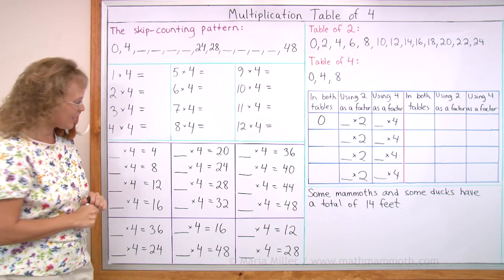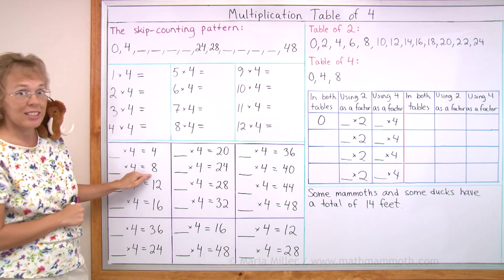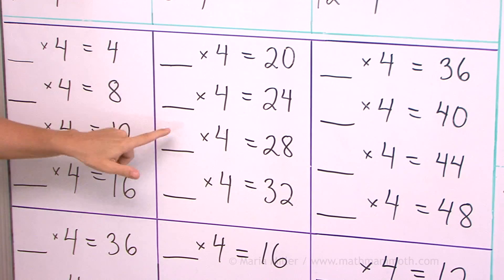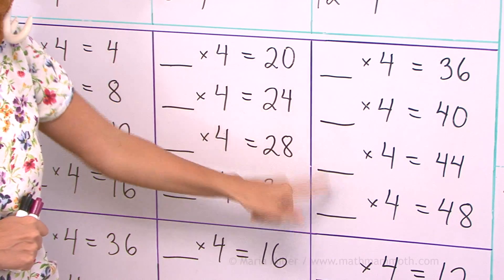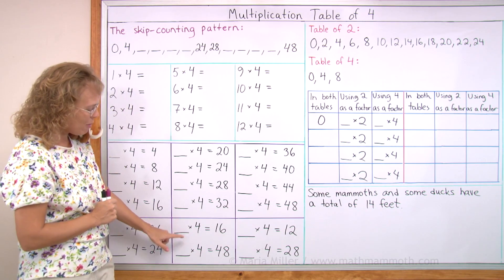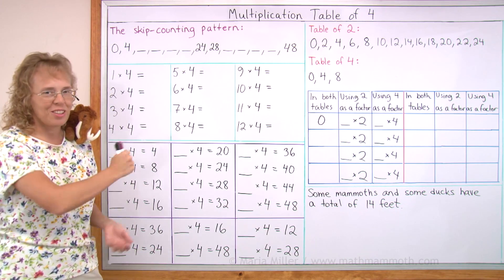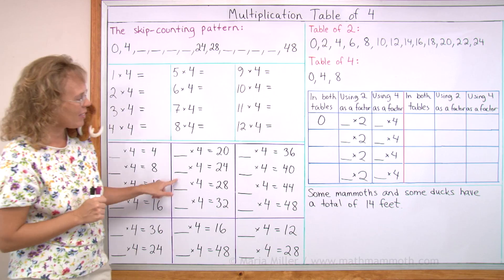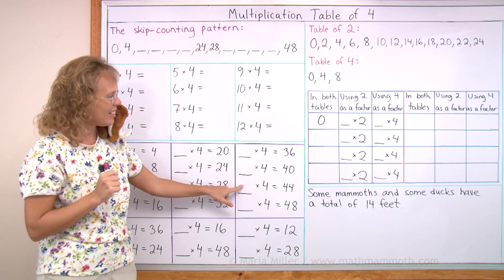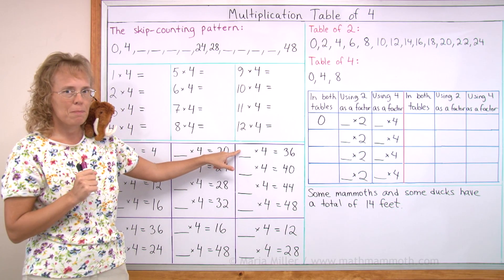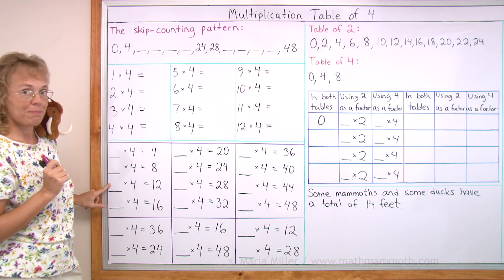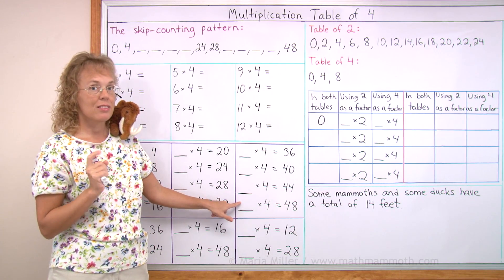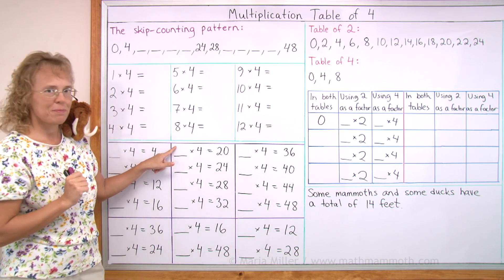Now let's practice the table backwards. Over here we have how many times four gives us these answers. The answers that go here are simply 1, 2, 3, 4, 5, 6, 7, 8, 9, 10, 11 and 12. So those are pretty easy, and that's why I wrote some of the problems in a random order so we will just practice all of them at once. Ready? How many times four is 28? — Seven. How many times four is 44? — Eleven. How many times four is 36? — Nine. How many times four is 12? — Three. And this one? — Eight. And this one? — Twelve. This one? — Five.